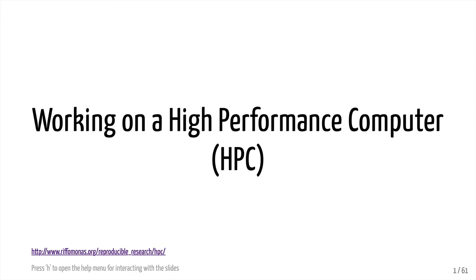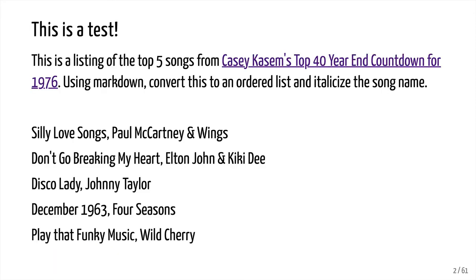Before we go into today's tutorial on working with high-performance computers, I'd like to give you a little test to see how much you remember of the previous discussion on Markdown. On this slide, you'll see a list of the top five songs from Casey Kasem's Top 40 Year End Countdown for 1976. Using Markdown, convert this list to an ordered list and italicize the song name. Go ahead and hit pause while you work on this exercise, and when you press play again, I'll show you the answers.